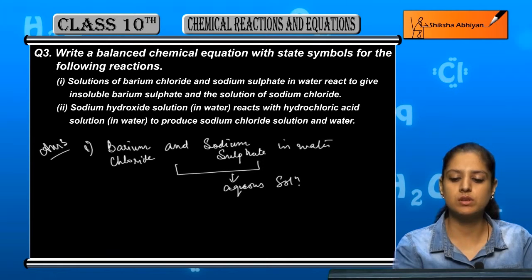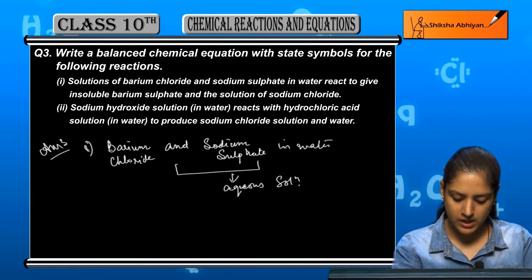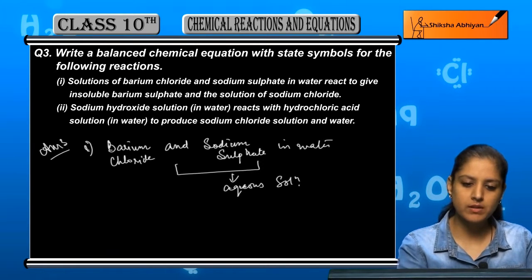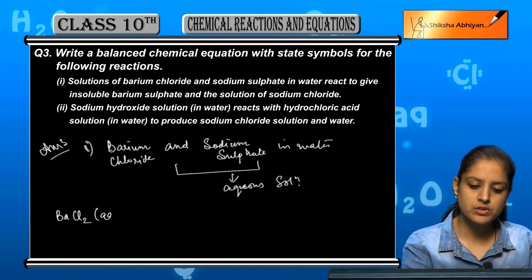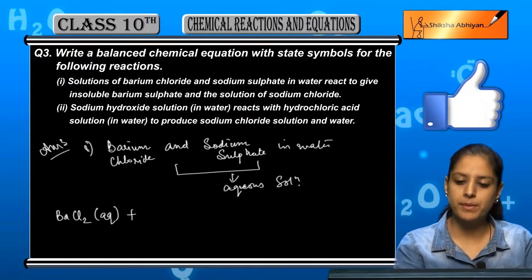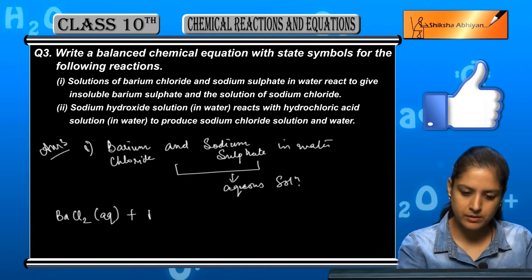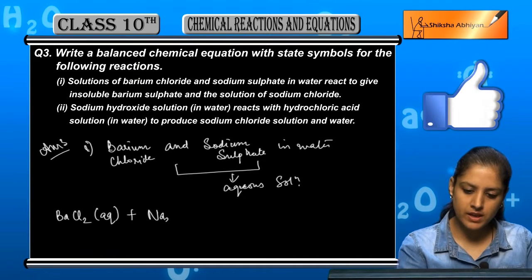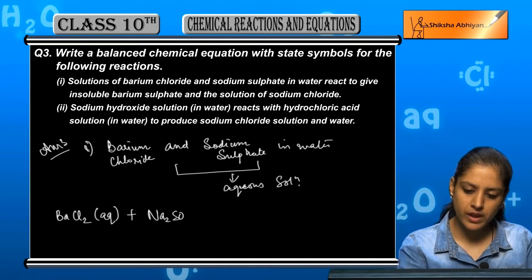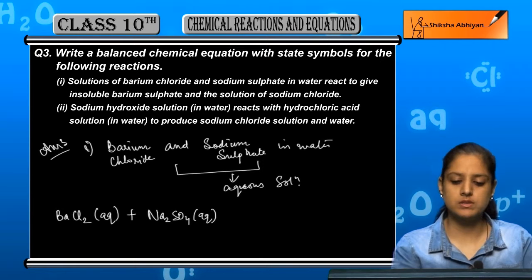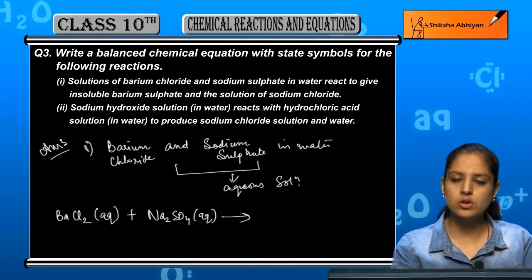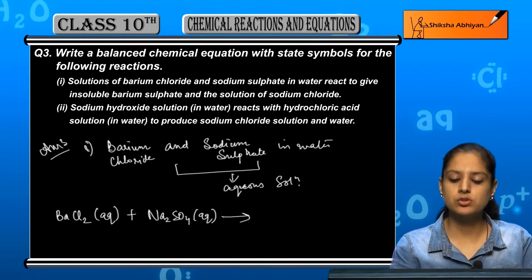Barium chloride is BaCl₂, which is an aqueous solution, plus sodium sulphate is Na₂SO₄, again aqueous solution.